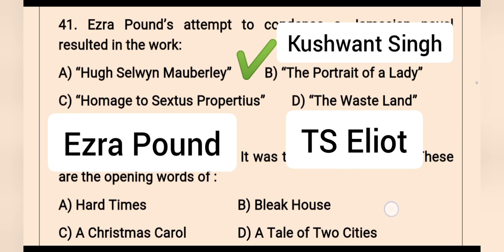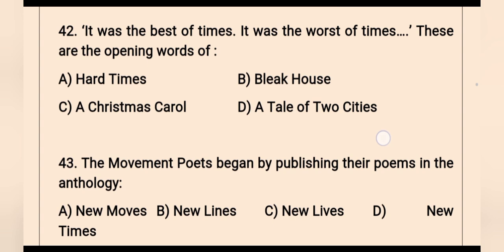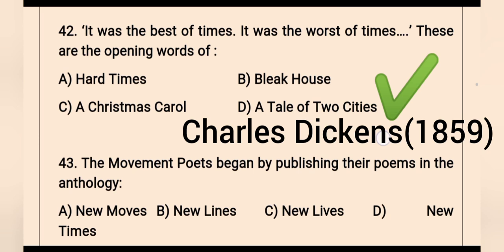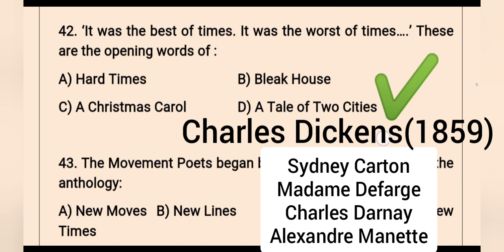The Wasteland, as we know, is by T.S. Eliot. Question 42: 'It was the best of times, it was the worst of times' — these are the opening words of A Tale of Two Cities, the right option. It's a historical novel by Charles Dickens published in 1859, set in London and Paris before and during the French Revolution. Characters include Sydney Carton, Madame Defarge, Charles Darnay, and Alexander Manette.